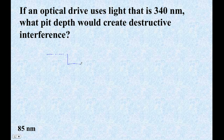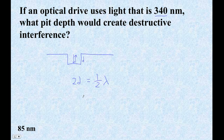So now the question is, we're going to need to design — we want to use 340 nanometer light, and we want to make the pits be the right depth. So the depth is D, and the laser light goes down and back, so the distance it travels is 2D, and we want that to be half the wavelength. So 2D is one half of 340.